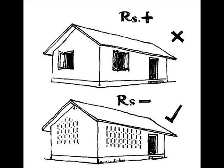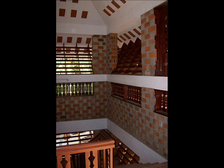The main advantage of rat trap bond is the economy in use of bricks, giving a wall one brick thickness with fewer bricks than a solid brick wall. Rat trap bond along with brick arches and filler slabs is the result of a cost-effective technology developed by the architect Laurie Baker.